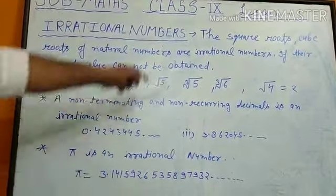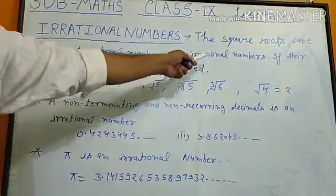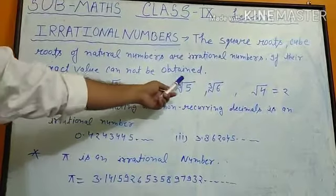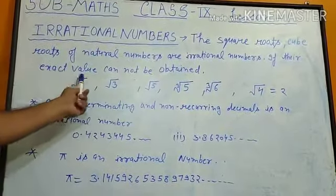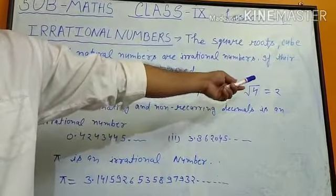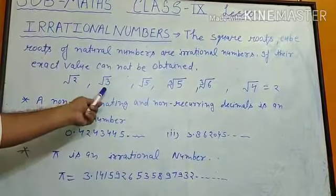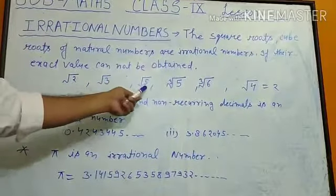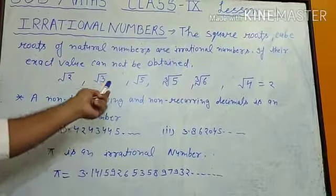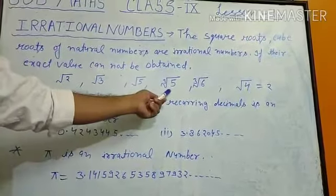The square roots and cube roots of a natural number are irrational numbers if their exact value cannot be obtained. For example, the square root of 4 has an exact value of 2, but square root of 2, square root of 3, square root of 5 — we cannot get the exact value of these. So cube root of 5 is also included.